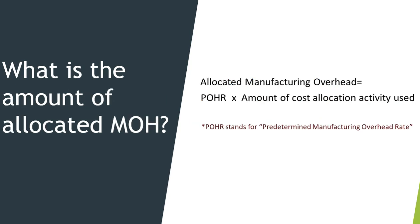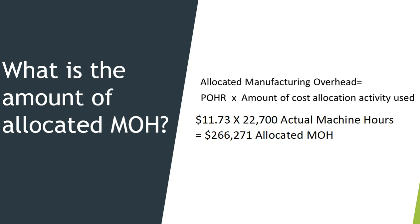Then to allocate overhead, we take the predetermined overhead rate times the amount of cost allocation activity used — in this case, the actual machine hours. So we take $11.73 and multiply it by 22,700 actual machine hours. This gives us $266,271 of overhead that we're going to allocate to our jobs.